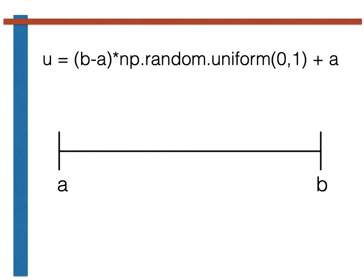If, by contrast, np.random.uniform(0,1) takes the largest possible value it can, i.e. 1, then u will equal (b minus a) multiplied by 1 plus a, which is b.